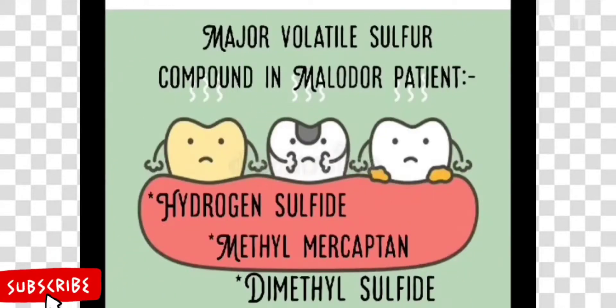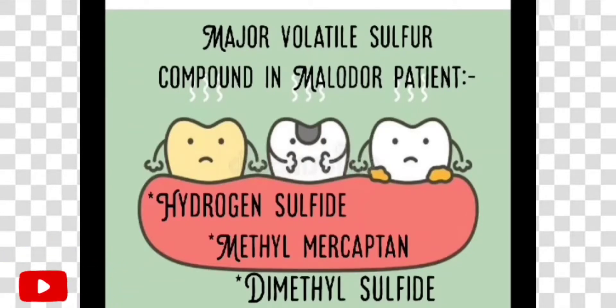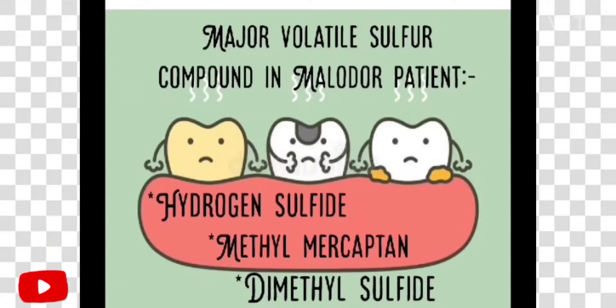This results in substances with free thiol groups such as cysteine and reduced glutathione, which produce volatile sulfur compounds and lead to oral malodor. The three major volatile sulfur compounds in malodor patients are hydrogen sulfide, methyl mercaptan, and dimethyl sulfide.